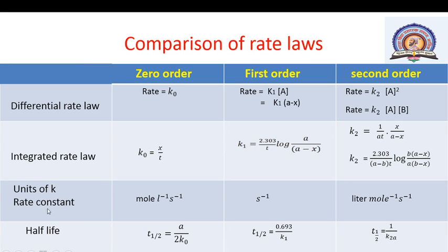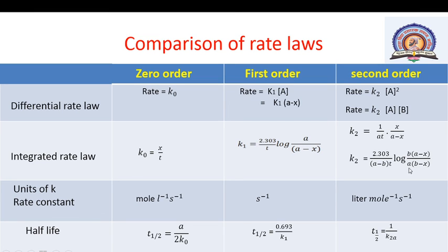The half-life periods are: zero order — t½ = a/(2k₀); first order — t½ = 0.693/k₁; second order — t½ = 1/(k₂·a), meaning the half-life is inversely proportional to the first power of the initial concentration a. This concludes the explanation of zero, first, and second order reactions.